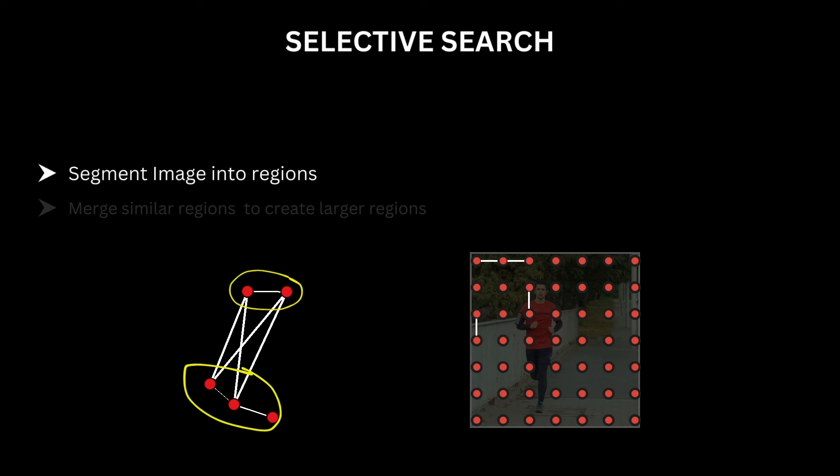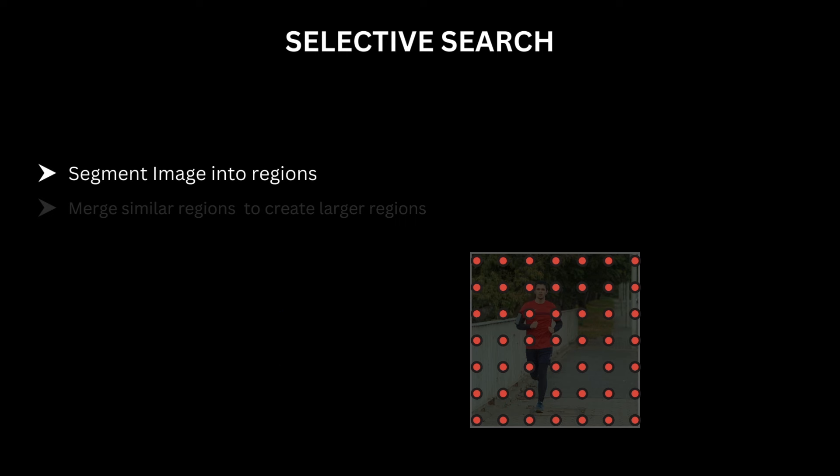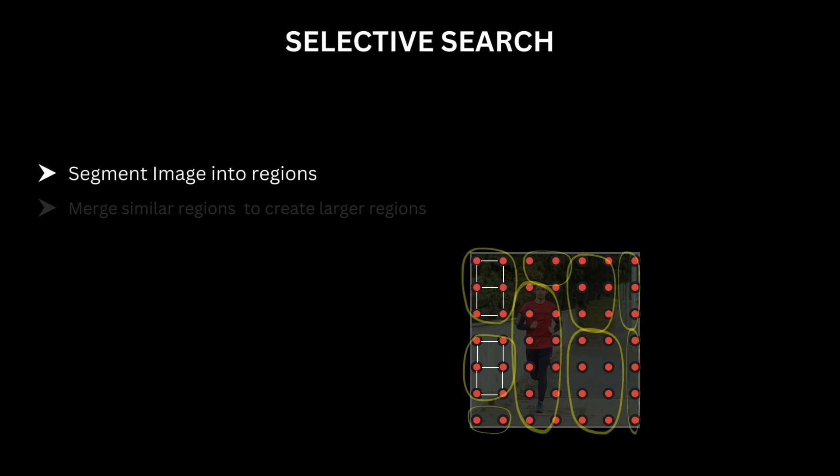There are quite a few implementation details here — like how you define edge weight, how you define neighborhood, and what the threshold criteria is for merging components. If you really want to understand all those technical details, check out the link mentioned in the description for graph segmentation, which is the one Selective Search uses. The goal of graph segmentation is ultimately to partition the graph into components such that elements in one component are similar to each other, and elements in different components are dissimilar.